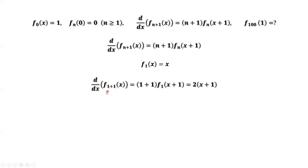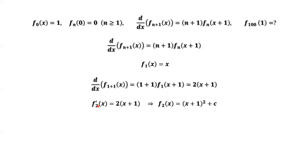Let's try n equals 1 for f2. The derivative of f2 of x equals (1+1) times f1 of x plus 1. We plug in f1 and get 2 times x plus 1. So the first order derivative of f2 equals 2 times (x+1). Therefore, f2 of x equals (x+1) squared plus c. Using the initial condition: 0 equals f2 of 0 equals 1 squared plus c, which implies c equals negative 1.